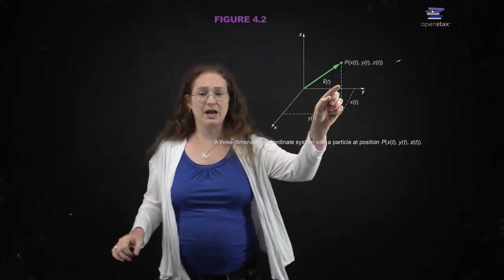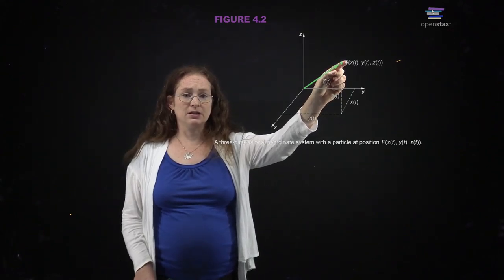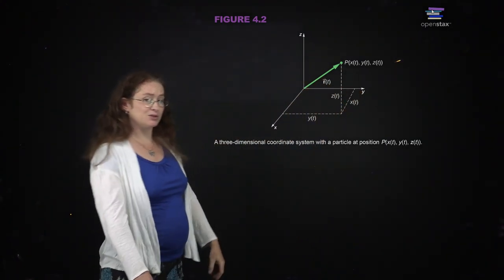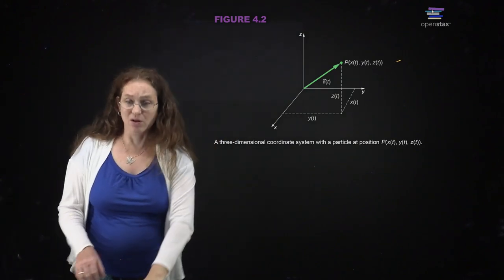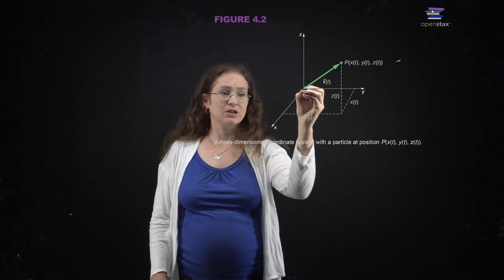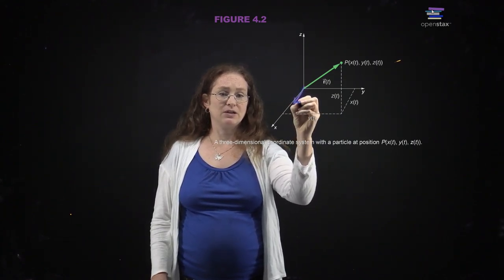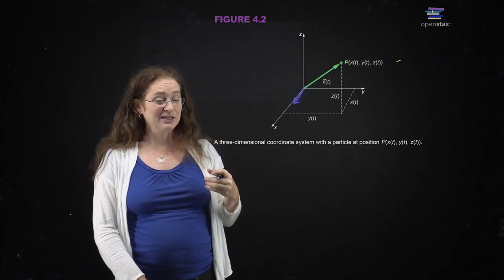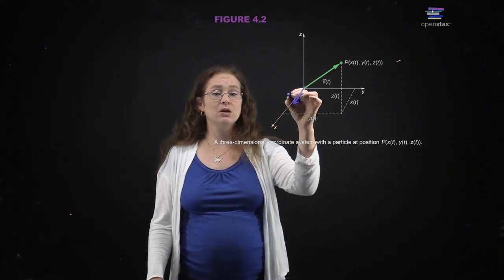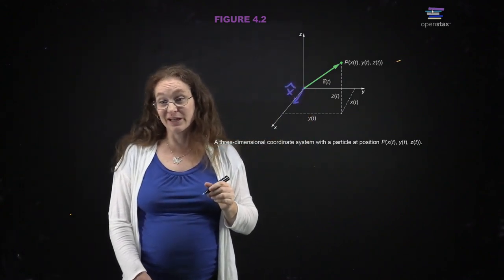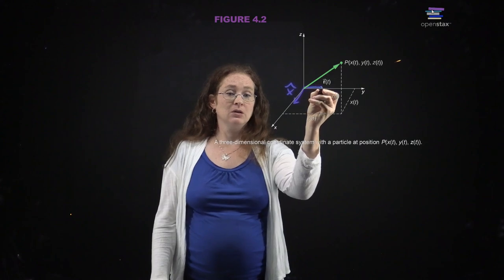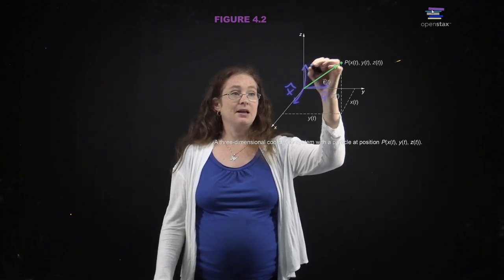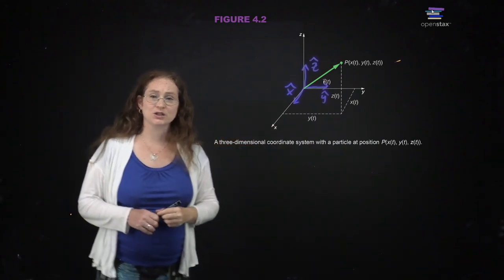So if you have some particle's position, it has an X, a Y, and a Z — three axes. I'm going to introduce the concept of a unit vector. X-hat is a vector of length 1 in the X direction. Y-hat is a vector of length 1 in the Y direction. Z-hat is a vector of length 1 in the Z direction.